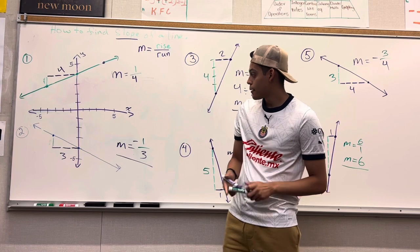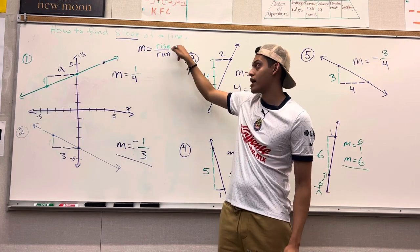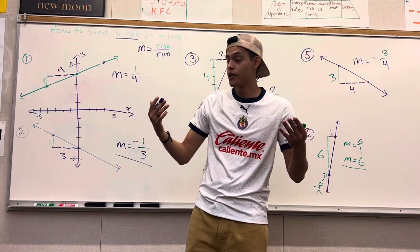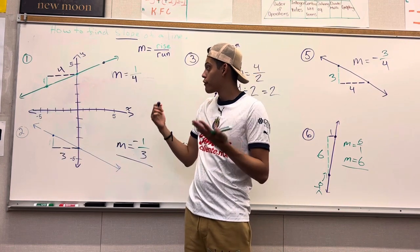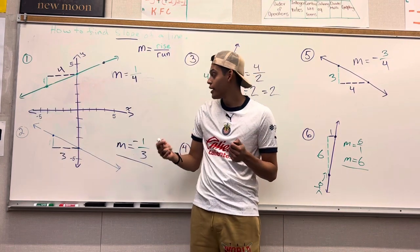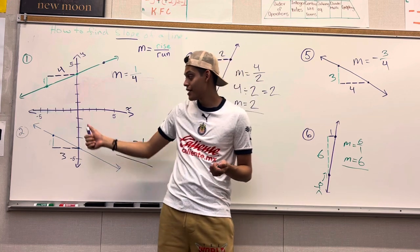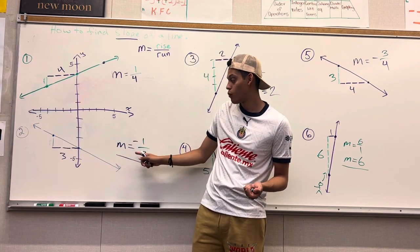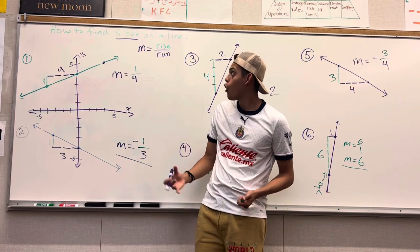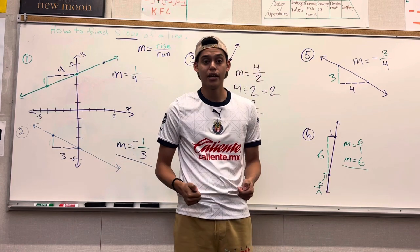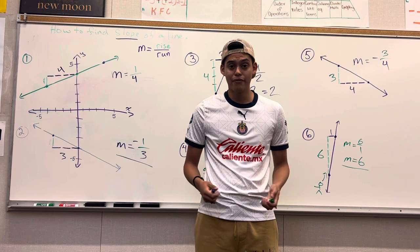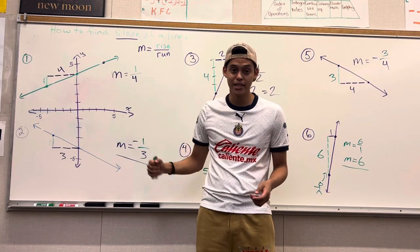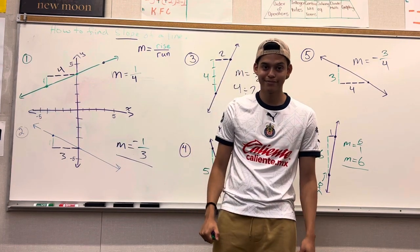Remember that M equals rise over run. If you are going uphill, you are feeling up on yourself — you are feeling in a positive mood. And if you are feeling down on yourself, then you are in a negative mood. This is why the fraction will be negative. Hopefully you guys learned and will stick around to see more math videos. Thank you so much. Bye-bye.